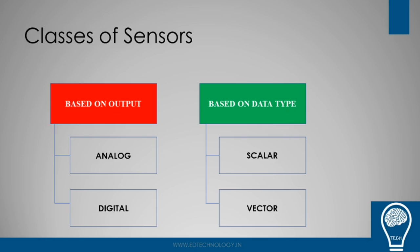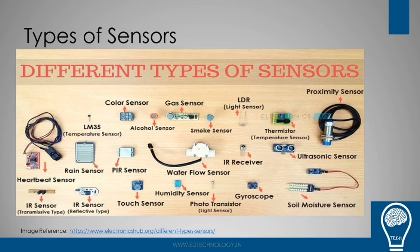When classified by data type, we again have two kinds: scalar sensors, which only include magnitude values, and vector sensors, which also include direction — making them more mechanical in nature. These are the different classes of sensors you will encounter in the world of IoT.